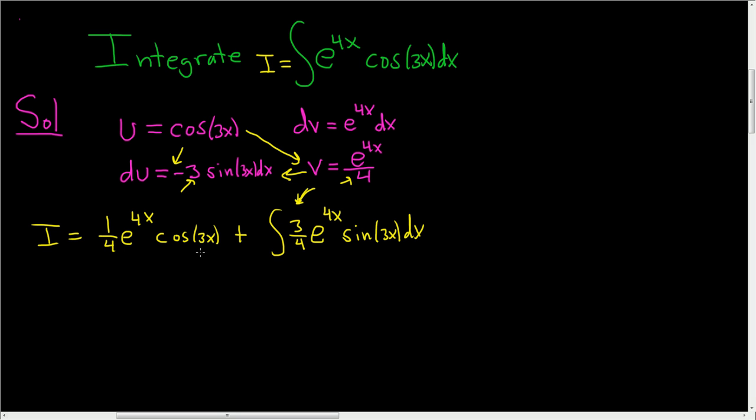Now what we do is we use integration by parts again. Now something worth mentioning is we let u be our trig function at the beginning, so we got to do it again. Otherwise we go in an endless psychotic loop. So if you try it you'll see what I mean. You end up with something that doesn't work. So u is sine 3x and dv is equal to 3 fourths e to the 4x dx.